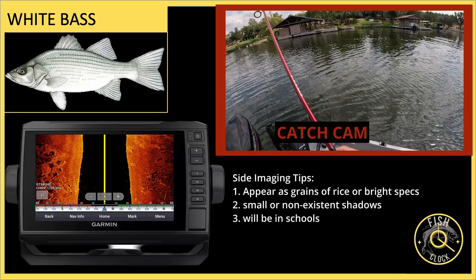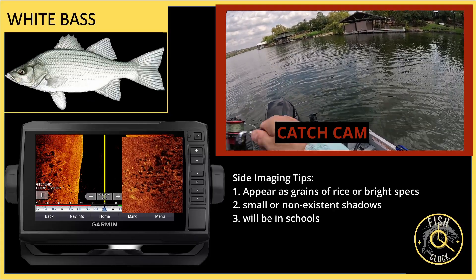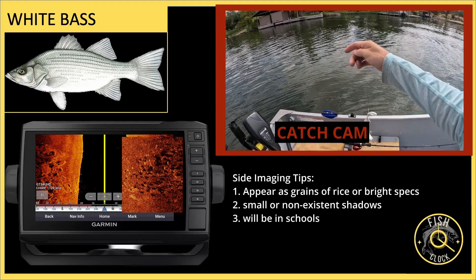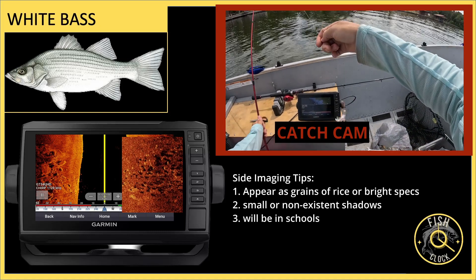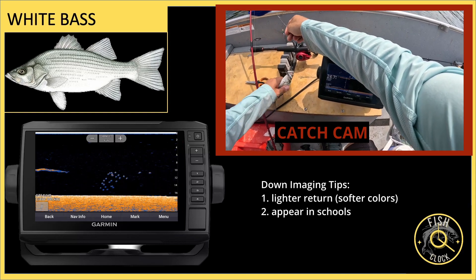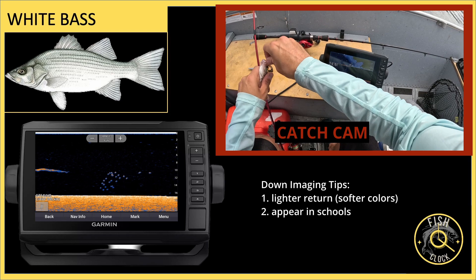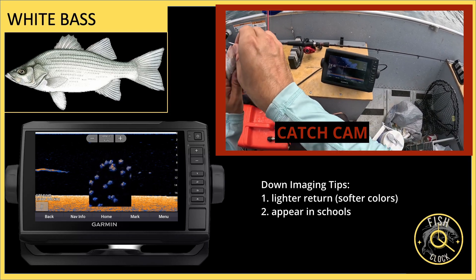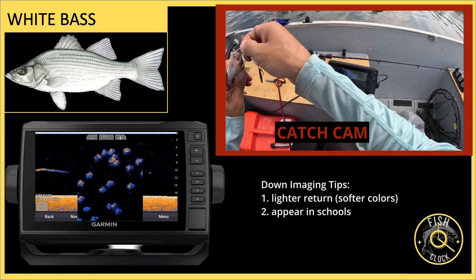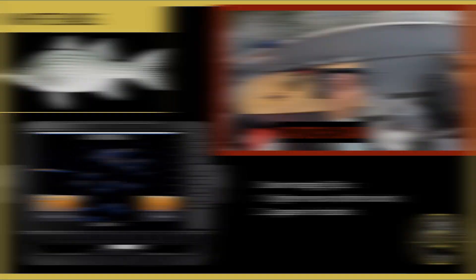I located a school of white bass along this rocky shoreline. The white bass appear as grains of rice or possibly even sand on side imaging. Some of the white bass produced decent shadows and others did not produce shadows at all — they just produced a little speck. The down imaging returns were also much weaker than other fish. You see that light blue, very light yellow return — it's a very soft return compared to other species. In addition, white bass have schooling behavior where they bunch up real close together, so if you see this on your fish finder, chances are you're looking at white bass.